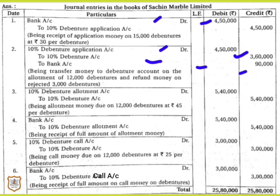Next, when allotment money is due, the entry is: 10% Debenture Allotment Account debit — debited with the amount due on allotment — that is 12,000 debentures × rupees 45, which comes to rupees 5,40,000. This amount will be transferred to 10% Debenture Account, which will be credited. Narration: being allotment money due on 12,000 debentures at rupees 45 per debenture.